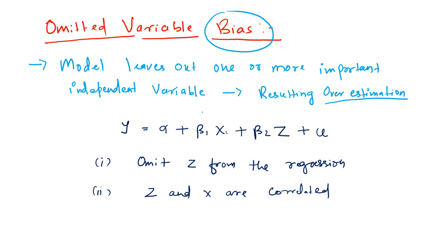Let us try to understand the theory behind this. Let us take a linear equation form: y equal to alpha plus beta 1 x plus beta 2 z plus the error term.